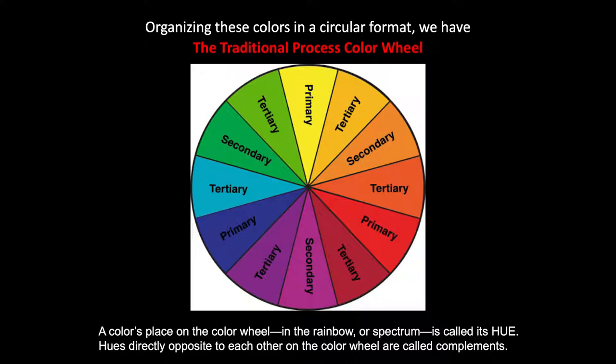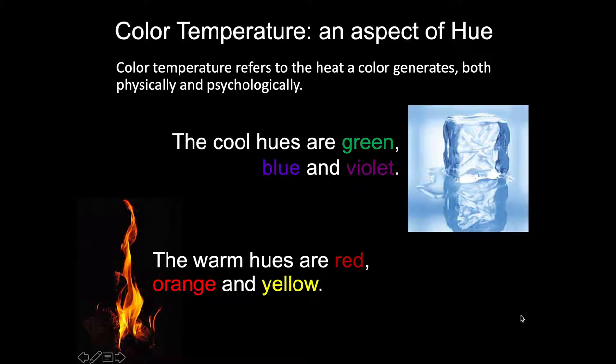Hues are placed directly opposite to each other on the color wheel when they're in a relationship that we call complementary. So yellow is a complement of purple, green is a complement of red, and blue is a complement of orange. A color's temperature is an aspect of its hue.